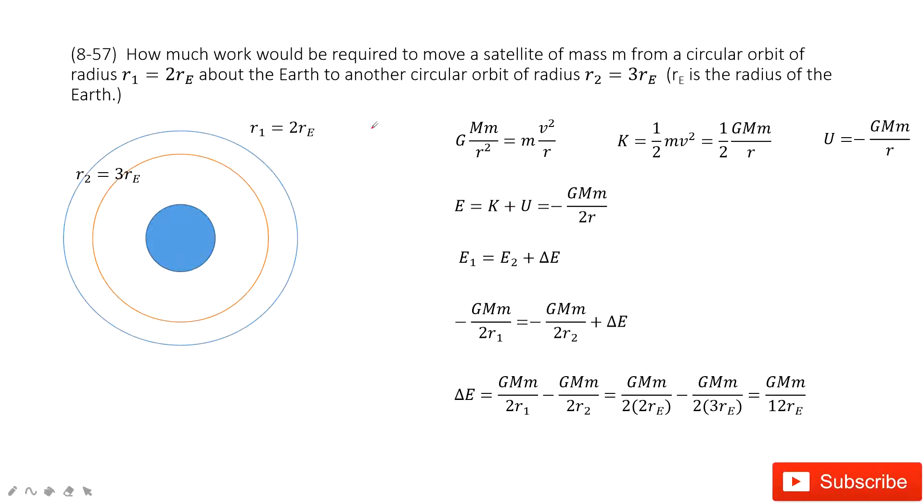Let's look at problem 57 in chapter 8. In this one, we can see we have the planet or satellite. It moves in circular motion around the earth in these two circles, R1 and R2.